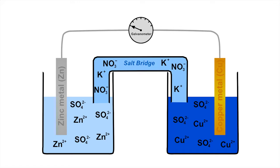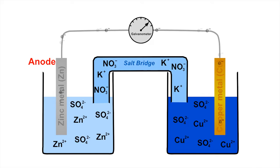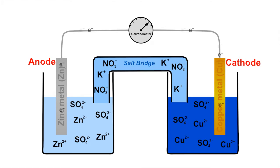When these electrodes are connected together with lengths of wire, an electric circuit is created, through which electrons flow from the zinc electrode, known as the anode, to the copper electrode, known as the cathode.